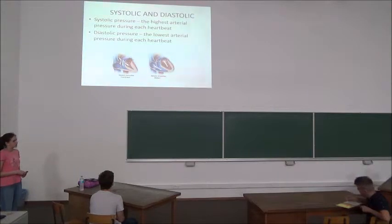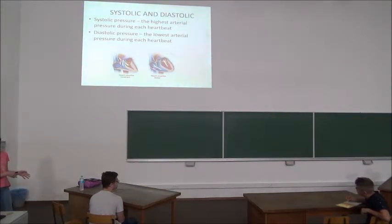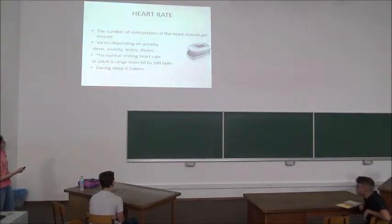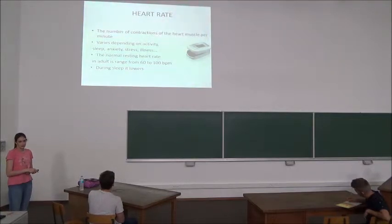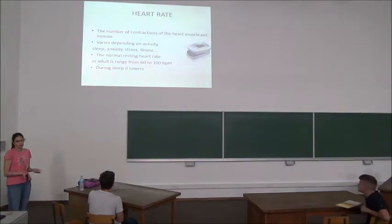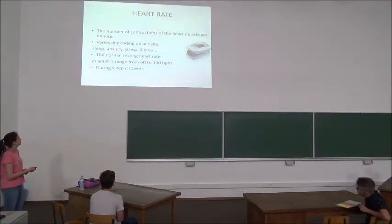There are two types that we measure: systolic and diastolic. Systolic pressure is the highest arterial pressure during each heartbeat, and diastolic is the lowest. Heart rate is the number of contractions of the heart muscle per minute, and it can vary depending on sleep, activity, and stress. During sleep, it slows to about 40 beats per minute. The normal heart rate in adults ranges from 60 to 90 beats per minute.